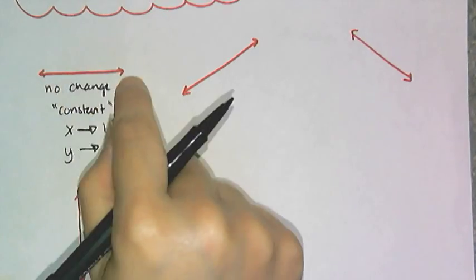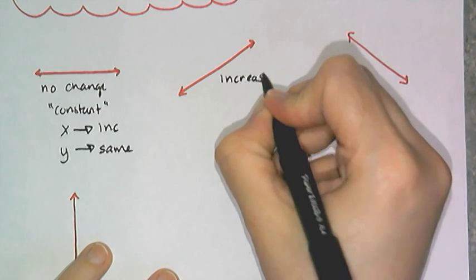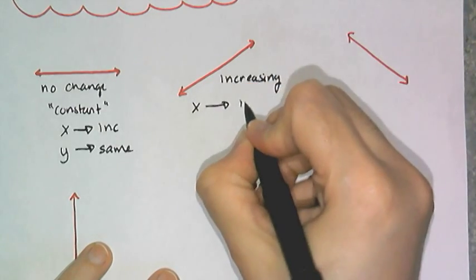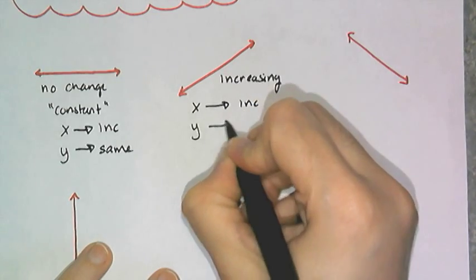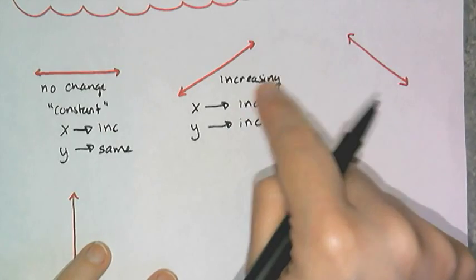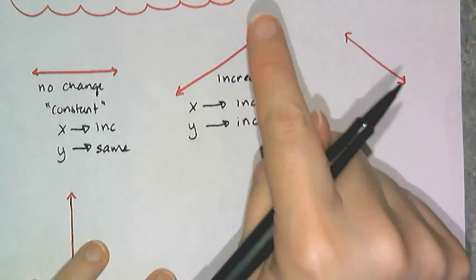Now here we say this is increasing. And the reason why we say this is increasing is because as X increases, the Y increases as well. We don't say positively correlated. We say increasing when it's a graph of an equation. Only use correlation with scatter plots.